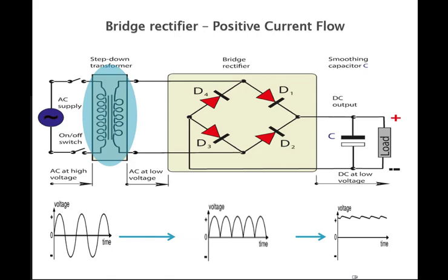Brief explanation. When the current flow is positive, that is when we have a positive voltage on the top here and a negative voltage down here, the first thing that happens is our transformer steps down the voltage and steps up the current. The current flows through the wire until it gets to this point here on the bridge rectifier where we have two diodes, D4 and D1.